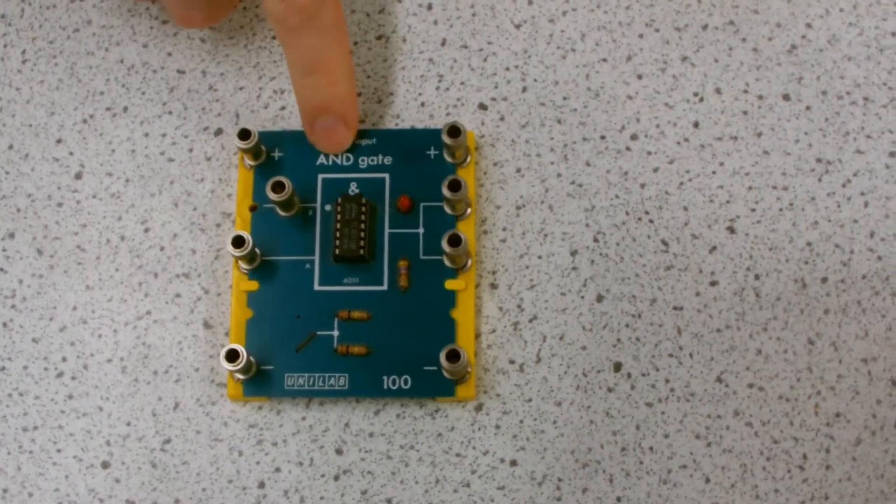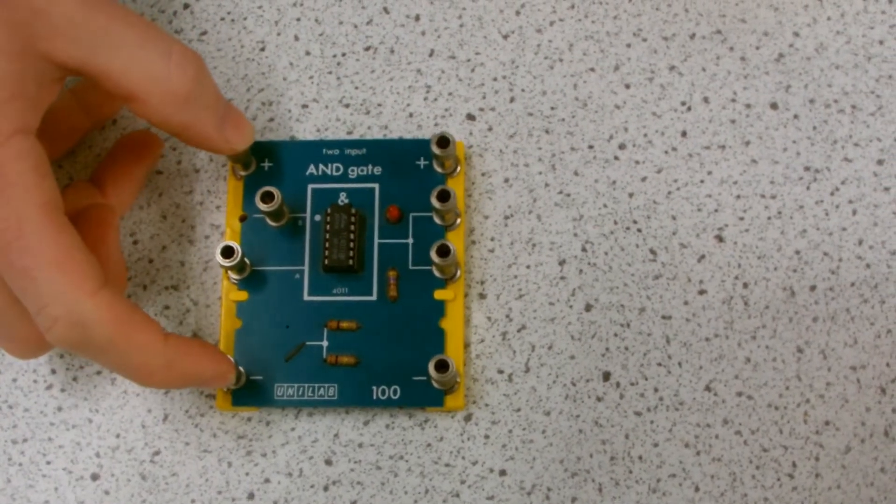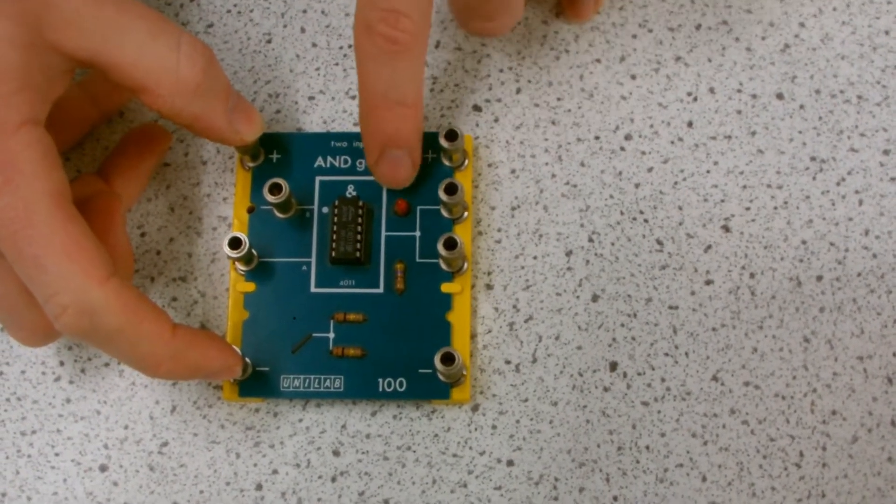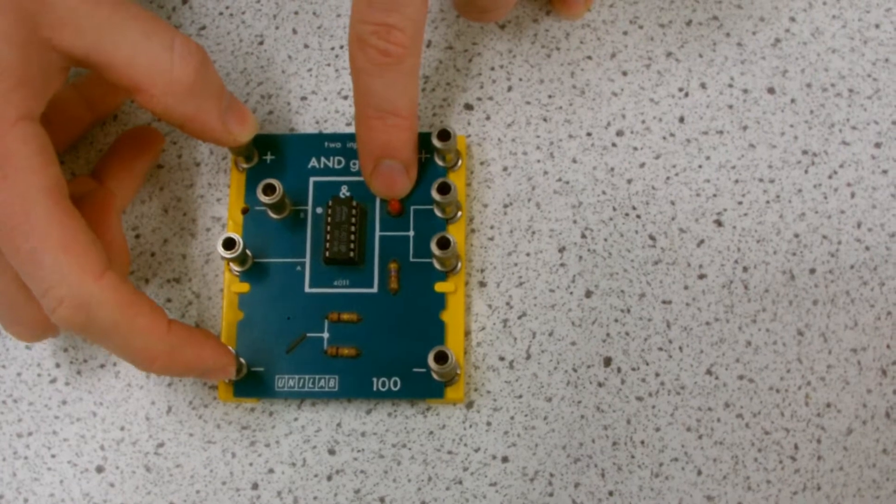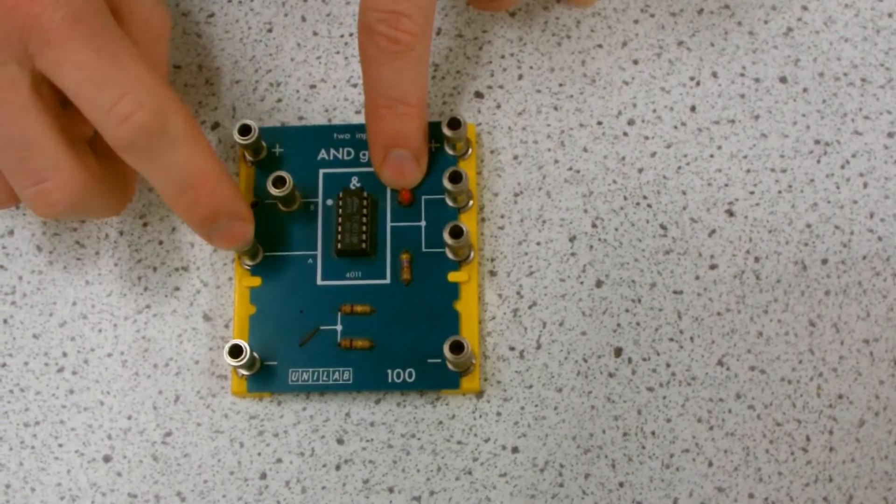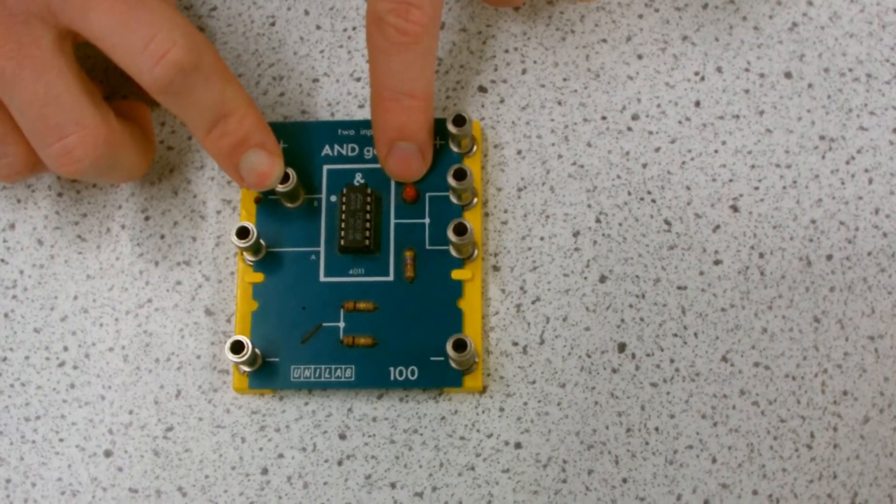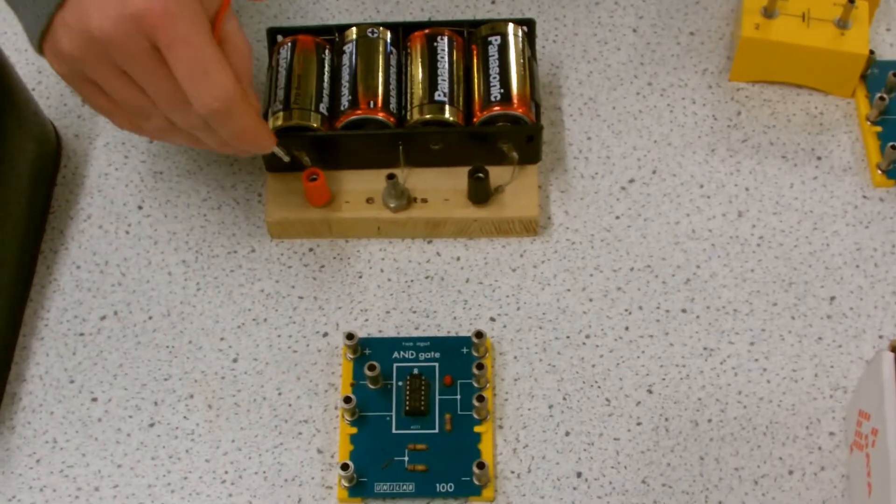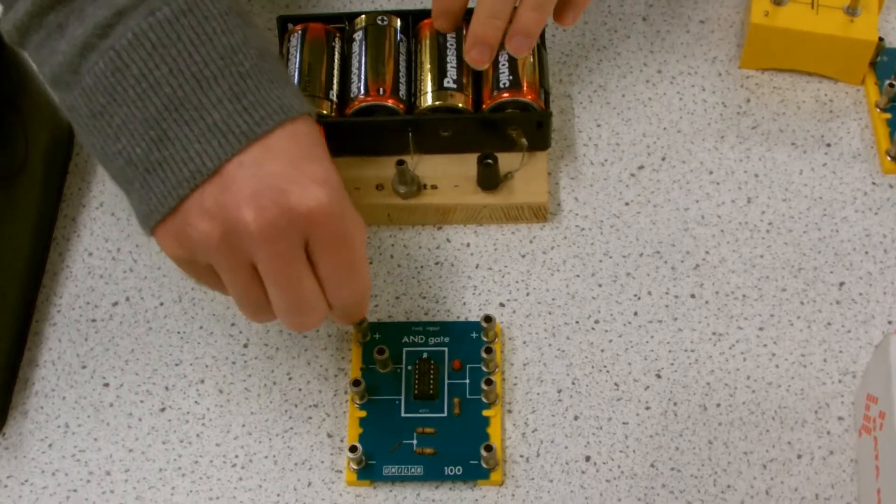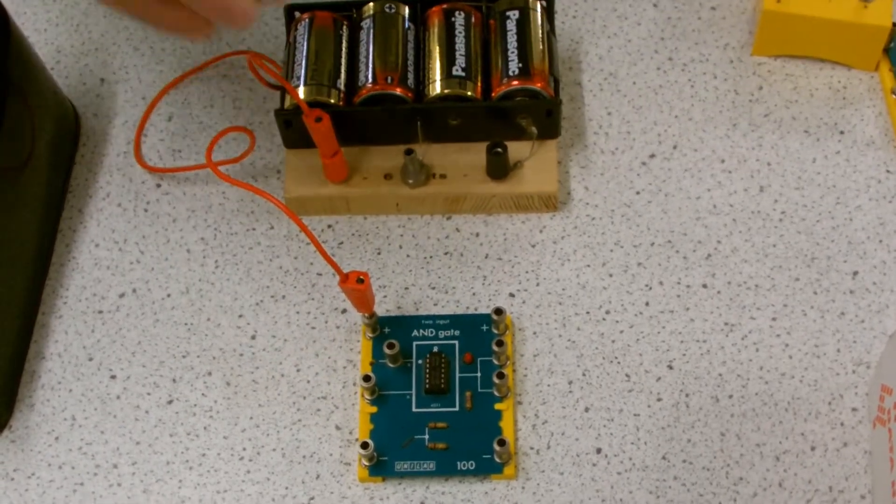So this is an AND gate. I'm going to put a big potential difference across here and here, and we're looking to see whether this light's going to turn on. These are our two inputs, A and B, and that is our output. So if the output's on, the LED's going to light up. Obviously red is positive, black is negative.